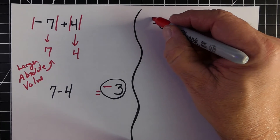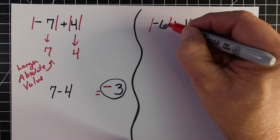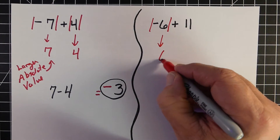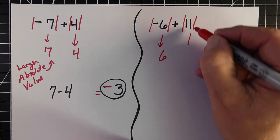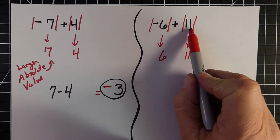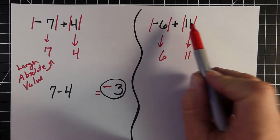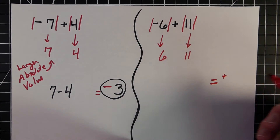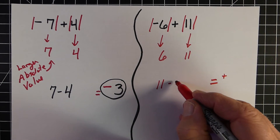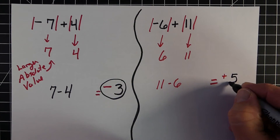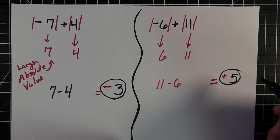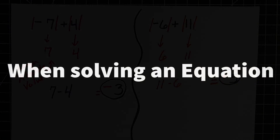If we look at this next example of negative 6 plus a positive 11, we find the absolute values of both: the absolute value of negative 6 is 6, and the absolute value of 11 is 11. We're going to take the sign of the larger absolute value — in this case, 11 is bigger and it's positive. Then because they're different, we find the difference between the two, which is a positive 5.